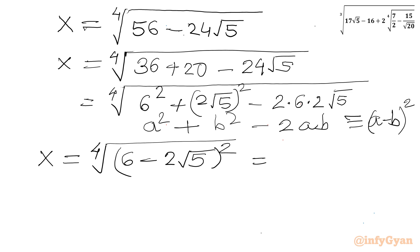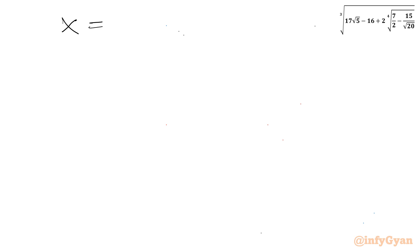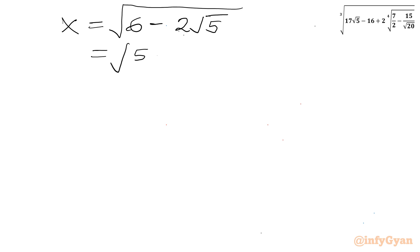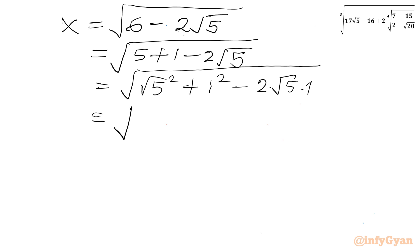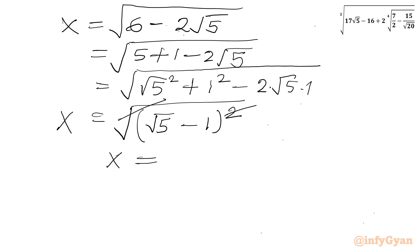Since we have a 4th root and a power of 2, we are left with √(6 minus 2√5). I can split 6 as 5 plus 1, and write 5 as (√5)², 1 as 1², and minus 2 times √5 times 1, which gives minus 2√5. So x equals the square root of (√5 minus 1)², which means x equals √5 minus 1.